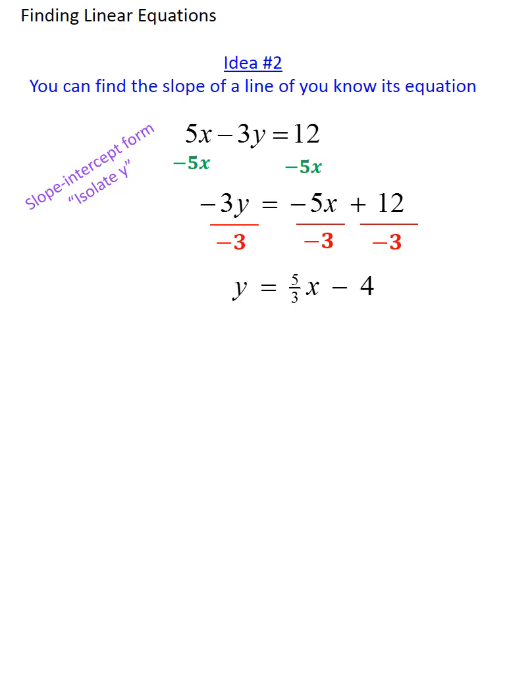And now that I've solved for y, I know the slope of this line is 5/3. By the way, it's worth noting that I got 5/3 by dividing negative 5 by negative 3, using the rule that a negative divided by a negative is a positive. And likewise, this division yielded negative 4.